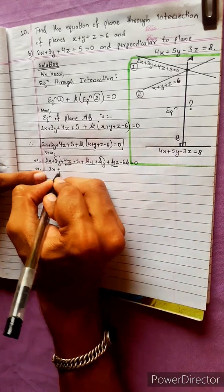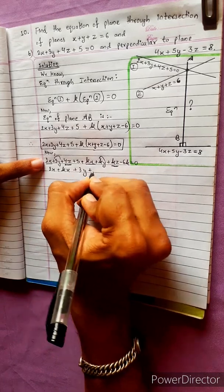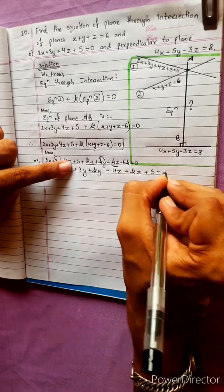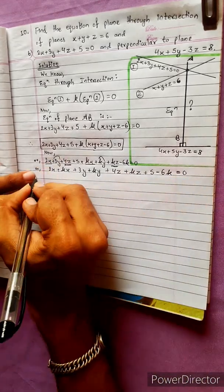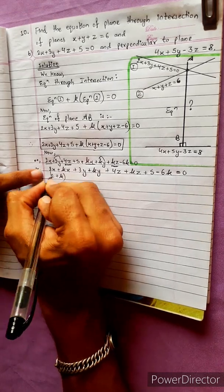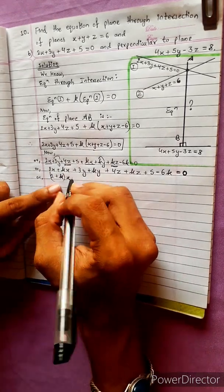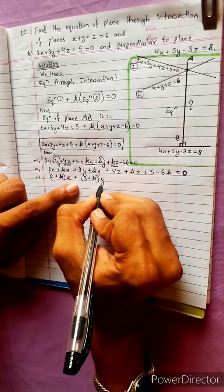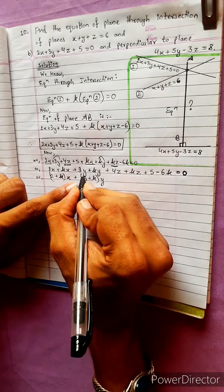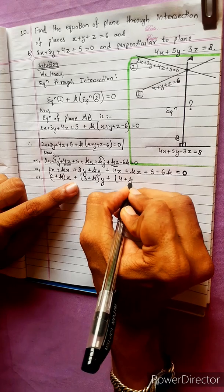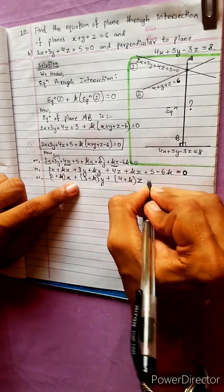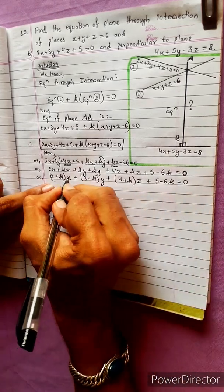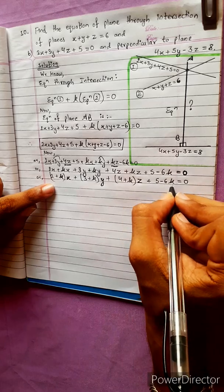2x plus kx plus 3y plus ky plus 4z plus kz plus 5 minus 6k equals to 0. Now we have 2 plus k with x common. Plus 5 minus 6k equals to 0. Now we have x, y, and z to compare.